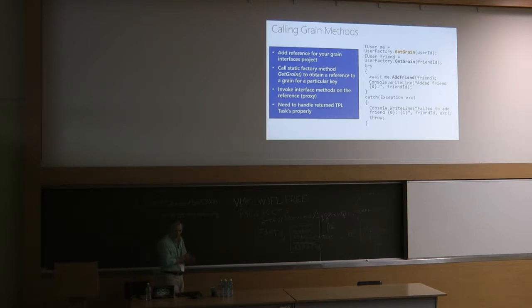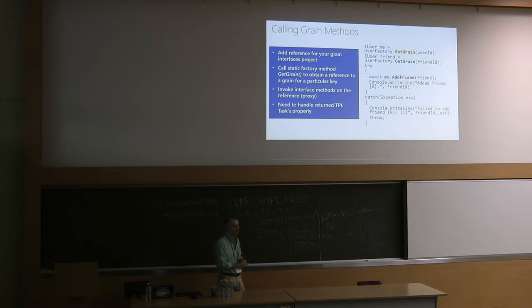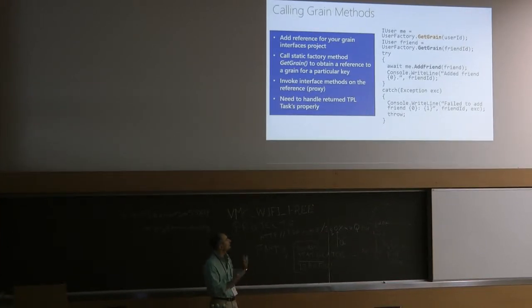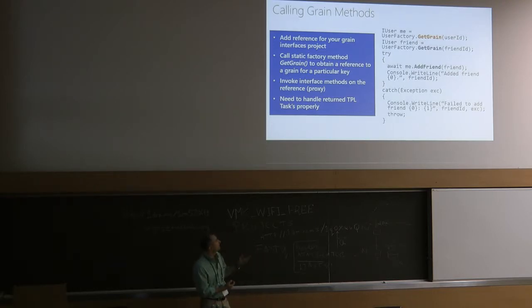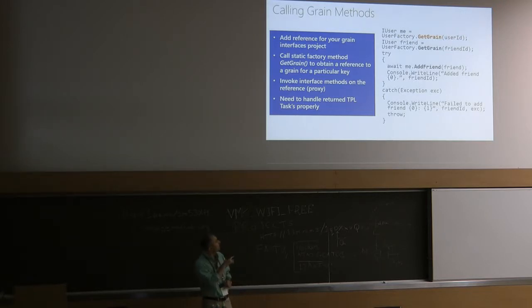This is how you call the grain method in our example. The first line calls GetGrain, a factory method, and passes a user ID obtained from a URL or token. Me is a grain reference — a proxy object. An important thing to understand performance-wise is that this is a local operation — it doesn't send any messages. Getting the reference is really a local nanosecond-scale operation. Then we do another GetGrain call with a different identity to get a reference to a friend.